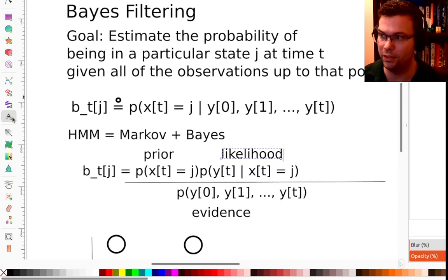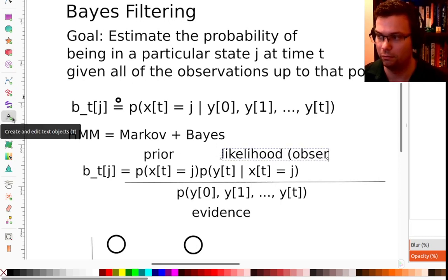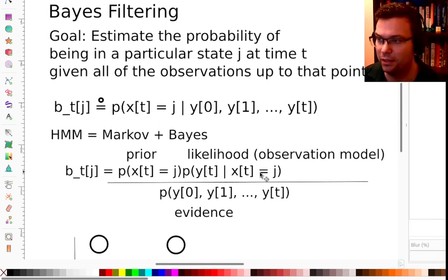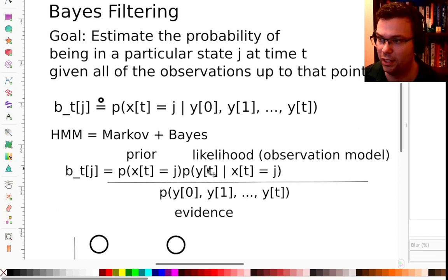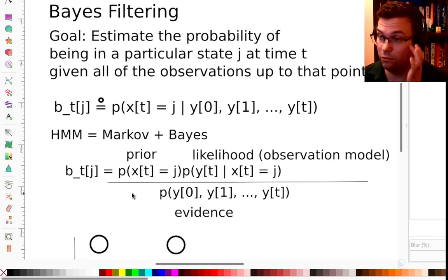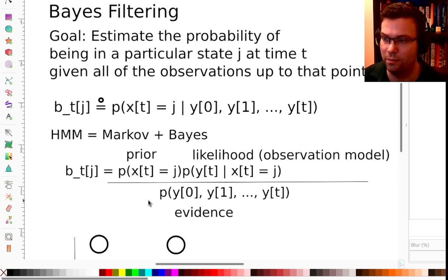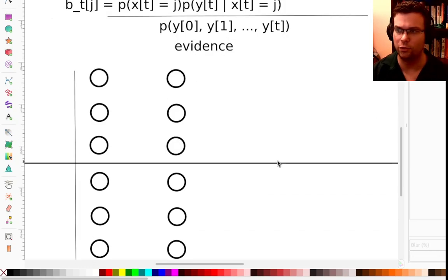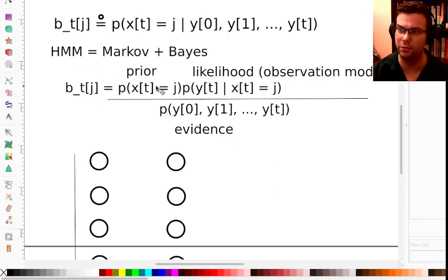This is what I was showing in the last robot video — given my idealized state scan, how likely is it that I would have made this observation if I had this ideal scan at that location? This is problem-specific. If you have a good model, this is where you plug it in. Now I need to work out the prior probability of being in a particular state at a particular time in the context of the hidden Markov model.